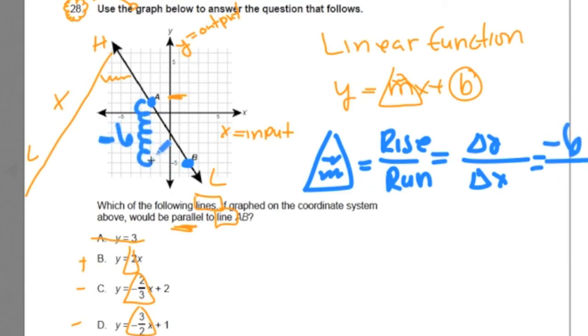And what's our run? One, two, three, four. Whenever you're going to the right, it's always positive four. Now we get a slope of negative six over four, which could be turned into negative six over four. And that would reduce to negative three over two.